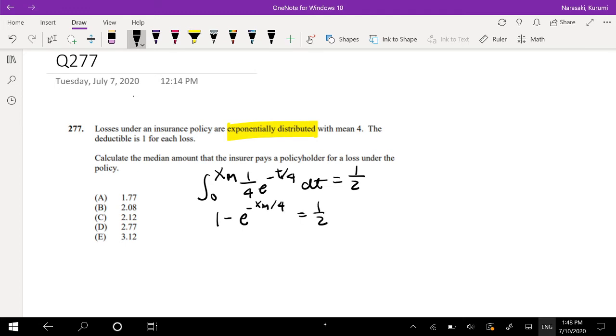So solving for XM, this is equal to 1 half equals e to negative XM over 4. Taking the natural log. Natural log equals... This is equal to XM equals... I'm going to bring the negative 4 to this side.